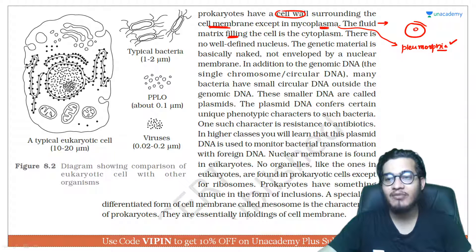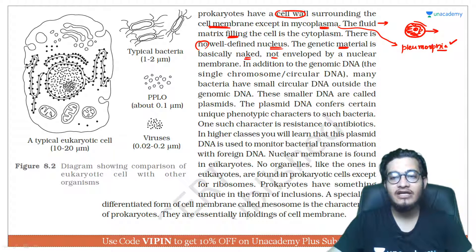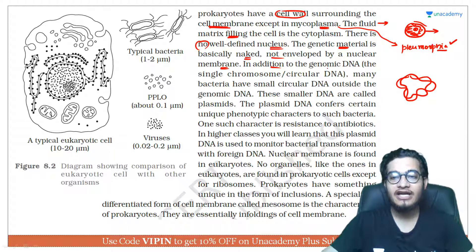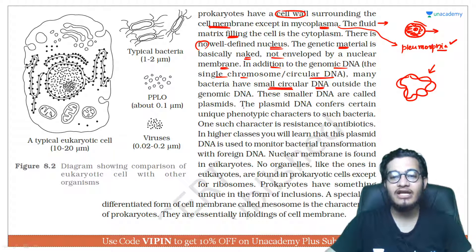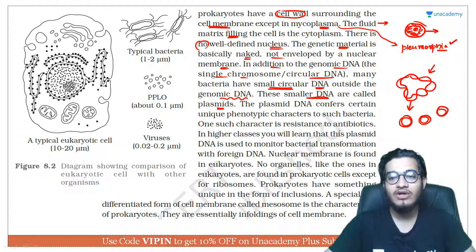The fluid matrix filling the cell is cytoplasm. The genetic material present here is basically naked — not enveloped by a nuclear membrane. This region is called the nucleoid. In addition to the genomic DNA, small double-stranded circular DNA pieces are also present, which are called plasmids.